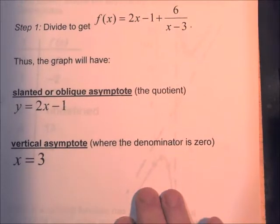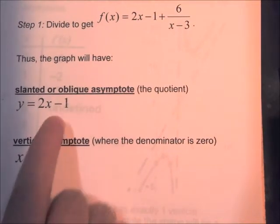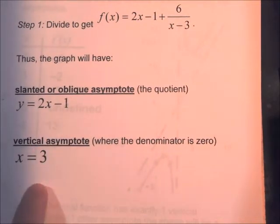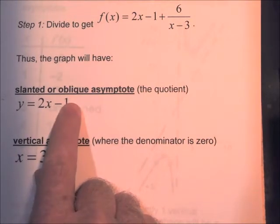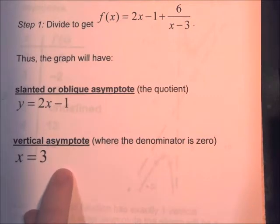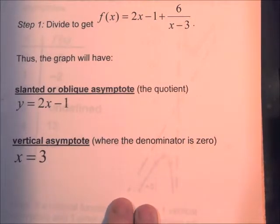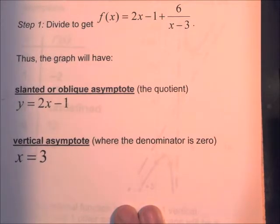So we have two asymptotes: y equal to 2x minus 1 and x equals 3. When there's one vertical asymptote and one other asymptote that's not vertical, the shape of the graph is actually going to be a hyperbola. We studied hyperbolas already, but some rational functions are also hyperbolas.